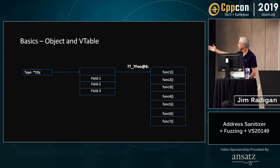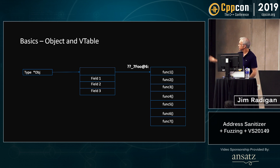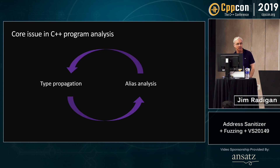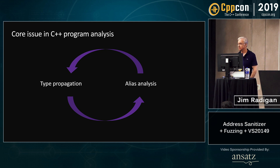To make this more concrete: that's a diagram of a pointer to an object, and the object has a pointer to a vtable. If you don't know what that type is and you're doing static analysis, you really don't know what that vtable is on the far right. Alias analysis feeds into type propagation and type propagation feeds back into alias analysis — it's a really tight cycle, and that's why correctness is hard in terms of analysis.